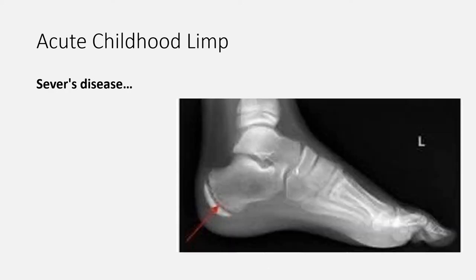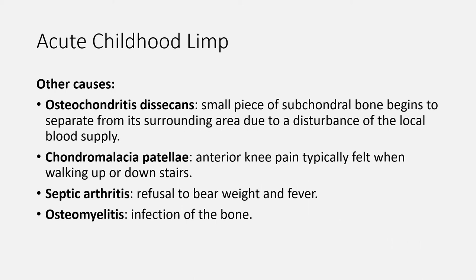Another cause of acute childhood limp is Sever's disease — caused by repetitive microtrauma from the pull of the Achilles tendon on the unossified apophysis. It is most common in boys aged 10 to 12 years who are active in sports. It often resolves within two weeks to two months, but a child may have recurrent symptoms until skeletal maturity. Another cause is osteochondritis dissecans, which occurs when a small piece of subchondral bone begins to separate from its surrounding area due to a disturbance of the local blood supply. Clinical findings are subtle and a small effusion or limited range of joint movement may be the only sign. Locking or instability suggests a loose body in the joint.